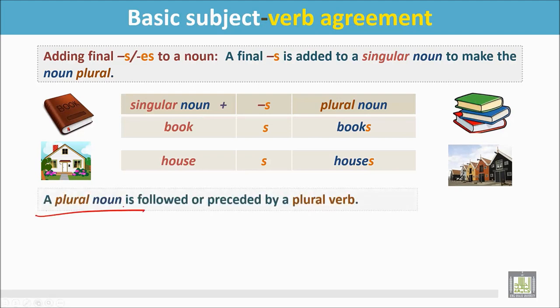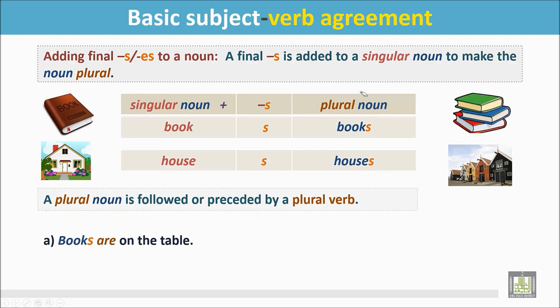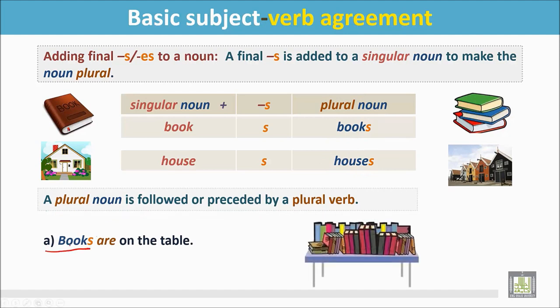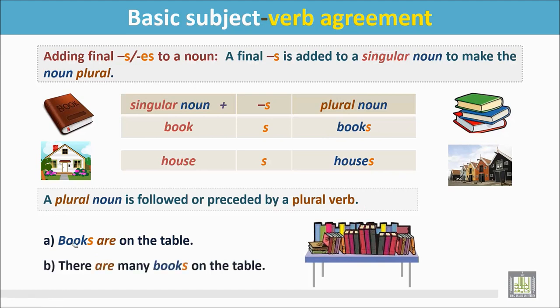A plural noun is followed or preceded by a plural verb. These are plural nouns: books, houses. Books are on the table — this is a plural noun followed by a plural verb, 'are.' We can also say: there are many books on the table, where the plural noun is preceded by a plural verb, 'are.'